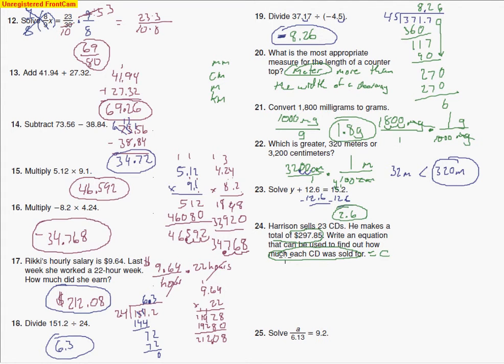So each CD costs C dollars. So what I'm going to do is I'm going to set up an equation this way. So 23 CDs times the cost of one CD equals $297.85. So that's the way I end up writing it. And again, C equals the cost of one CD.